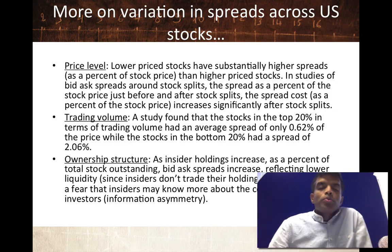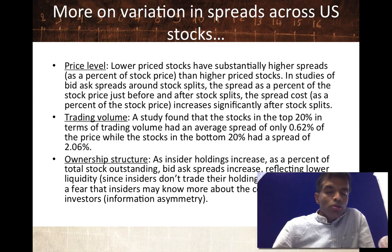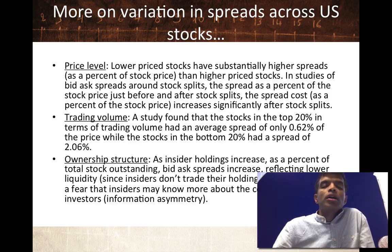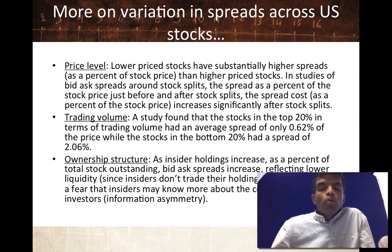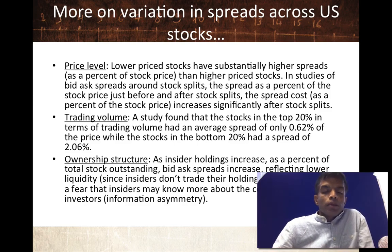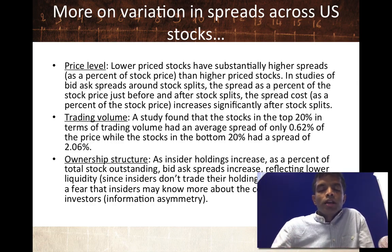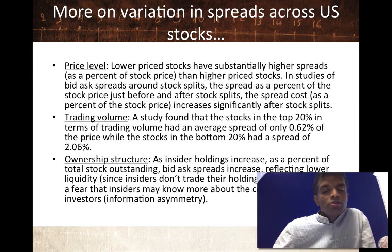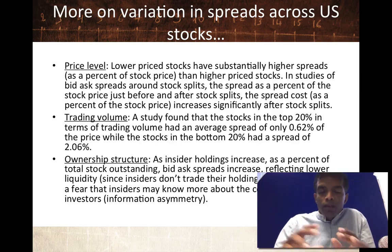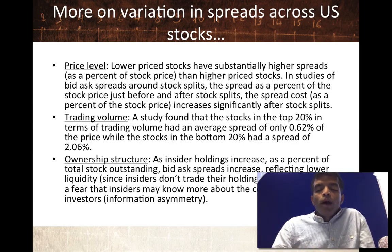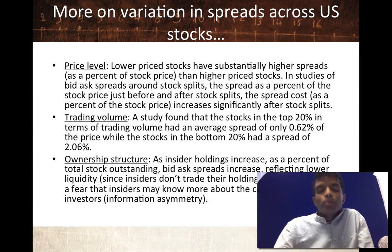Looking at the variation in spreads across U.S. stocks, three variables seem to drive the spread the most. One is the price level — lower-price stocks have higher spreads than higher-price stocks. Second is trading volume — the more liquidity and trading volume in a stock, the lower the spread tends to be. Third is the ownership structure: as insider holdings climb as a percent of total stock outstanding, bid-ask spreads tend to increase. So if you have a stock where 80% is held by insiders, don't be surprised to see larger spreads than if 90% is held by institutions.